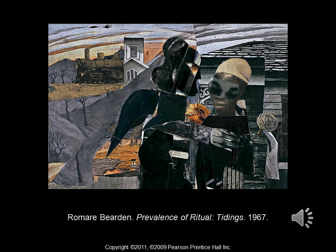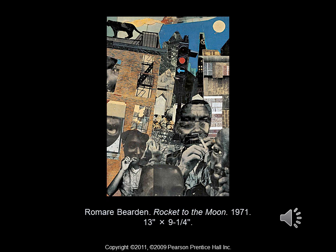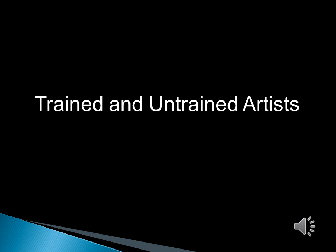Prevalence of Ritual Tidings from 1967 is a photomontage and a collage. A collage is a work made by gluing various materials on a flat surface, and a photomontage is the process of combining parts of various photographs into one photograph. The piece we're looking at right now is Rockets of the Moon from 1971 — a very symbolic piece. If you look closely at the upper right-hand corner, you see a rocket ship going to the moon, but you also see urban elements on the bottom, basically symbolizing the differences between different types of Americans during the 1960s.